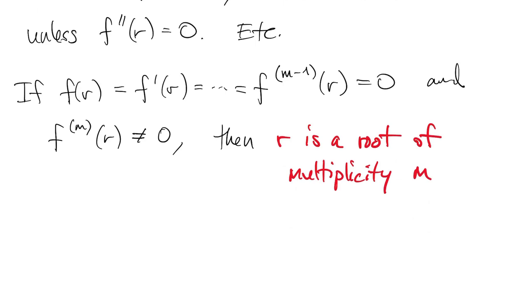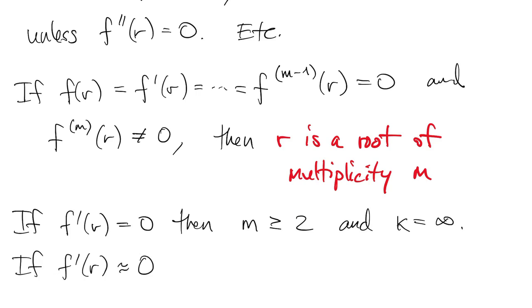The most important thing is when the multiplicity is greater than one. So if f prime is also zero at the root, then we know the multiplicity is at least two, and we also know that our condition number is infinite. But if f prime is non-zero but small, kappa is finite, but it's still very large, so it's a lot like being close to a singular matrix in the linear system problem.